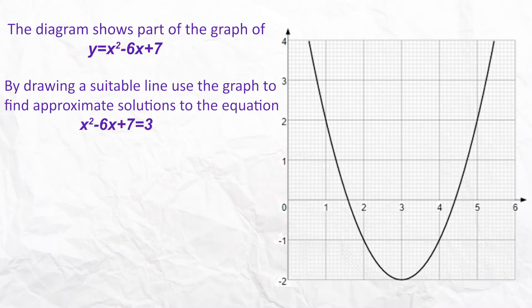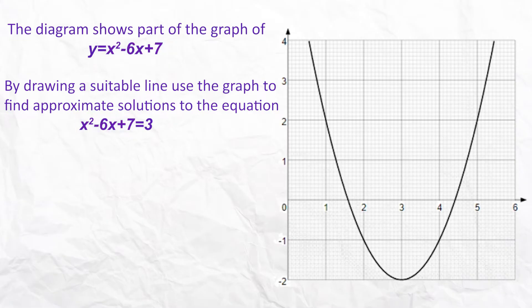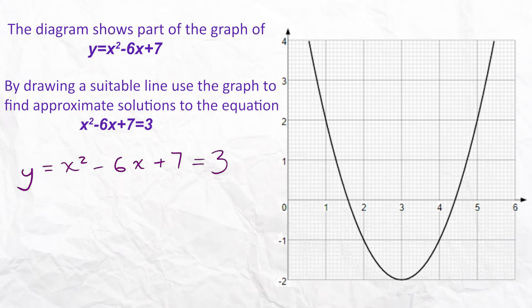The diagram shows part of the graph of y equals x squared minus 6x add 7, and by drawing a suitable line, use the graph to find approximate solutions to the equation x squared minus 6x add 7 equals 3. Both equations have x squared minus 6x add 7. The graph tells us y equals x squared minus 6x add 7, and the question says that expression equals 3 — so that must mean y equals 3.